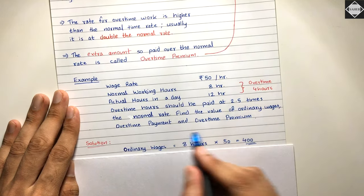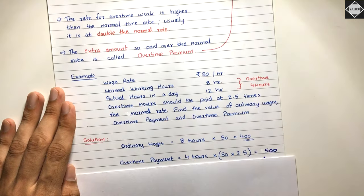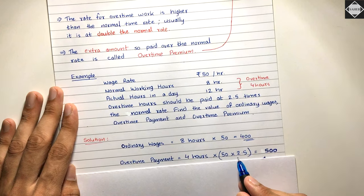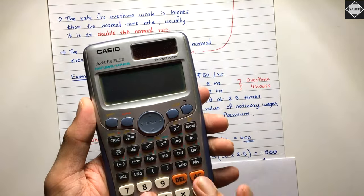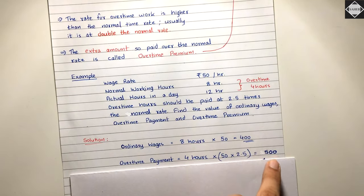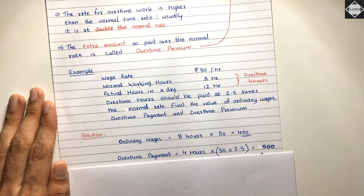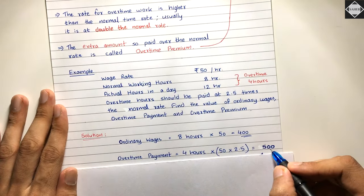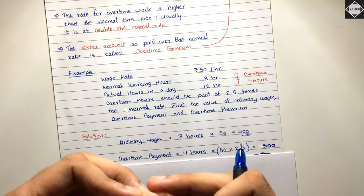Overtime payment is 4 hours into 125 rupees, which equals 500 rupees. So the overall earning on that day is 400 plus 500, which is 900 rupees. But from a cost accounting perspective, we can't take this 500 as it is — we have to break it down. The treatment of overtime premium depends on various factors, so we must separate the overtime payment into normal wages for overtime work and overtime premium.